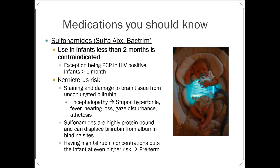A couple of slides on medications to know as far as pediatric restrictions. Most medications used in adults can be used in kids, but there are a few things to consider. First, sulfonamides — Bactrim is a good example. Sulfamethoxazole use in infants less than two months is contraindicated, with an exception for HIV-positive infants over a month for pneumocystis prophylaxis. The risk is kernicterus — staining and damage to brain tissue from unconjugated bilirubin — which prevents the body's ability to process bilirubin correctly, causing high blood concentrations leading to brain damage and encephalopathy.